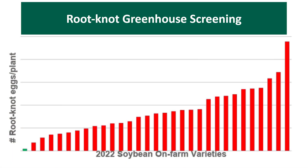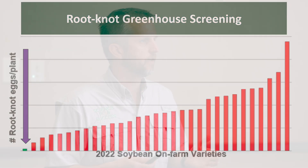We took varieties and did a greenhouse screening. From left to right you go from more tolerant to less tolerant. After inoculation, at the end of the growth cycle, we had a higher nematode count on the right side. The purple arrows point to the one variety — shown by a green bar — that we would consider actually resistant, where the nematode count was lower at the end than at the start. You may not always find a resistant variety, but a tolerant one is still valuable — nematode numbers may still build in the soil, but the soybeans can still grow well.